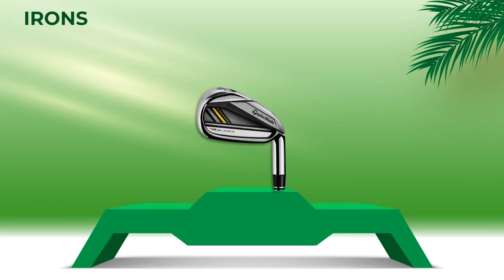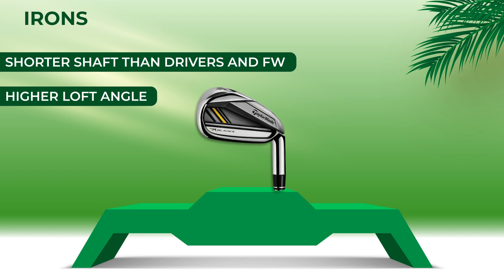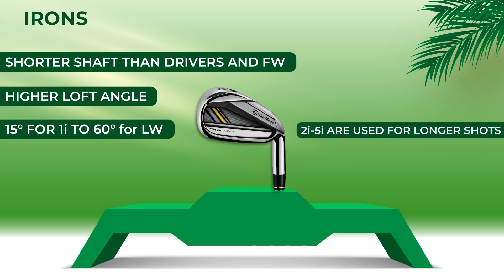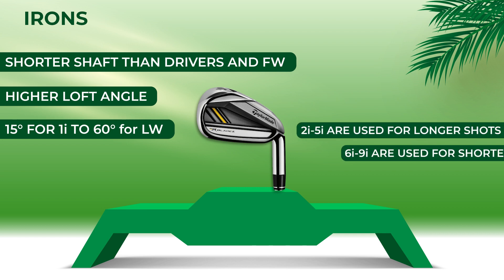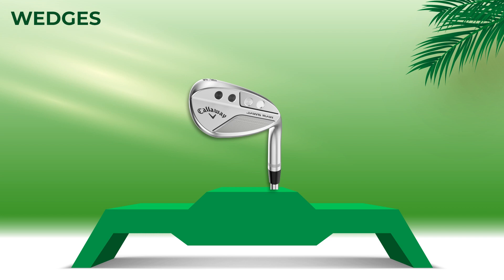Irons are the most versatile type of golf club and are used for a wide range of shots on the course. They have a shorter shaft than drivers and fairway woods and typically have a higher loft angle. Irons are available in a wide range of lofts, from as low as 15 degrees for the one iron to as high as 60 degrees for the lob wedge. The lower numbered irons, two to five, are typically used for longer shots, while the higher numbered irons, six to nine, are used for shorter shots and approach shots to the green.